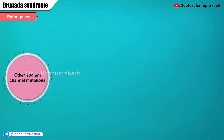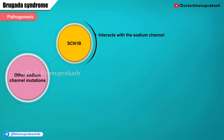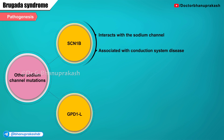Other sodium channel mutations include mutation in SCN1B, an accessory subunit that interacts with the sodium channel and is also associated with conduction system disease. Mutations in GPD1-L, a gene that affects trafficking of the sodium channel, can also cause the Brugada pattern.